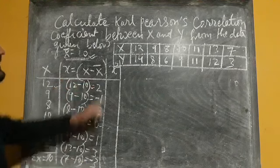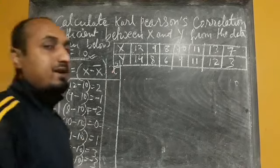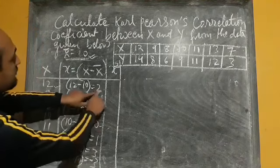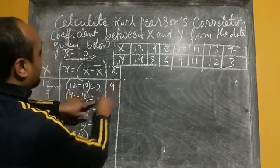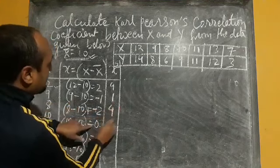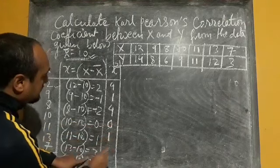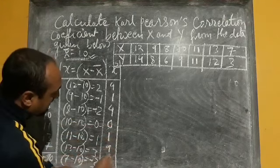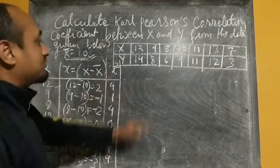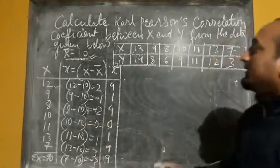Now we calculate x-squared — the square of each small x value. 2-squared = 4; minus 1 squared = 1; minus 2 squared = 4; 0 squared = 0; 1 squared = 1; 3 squared = 9; minus 3 squared = 9. We have now calculated the values of x-squared.